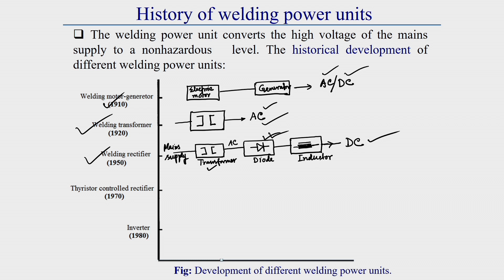The inductor, when it blocks AC and allows DC, is termed a choke. Another category is the thyristor-controlled rectifier, similar to the welding rectifier except that thyristors replace the diodes. A thyristor is a three-terminal device that switches on only at a rated voltage and gate signal, unlike a diode which operates at any voltage without a gate signal.